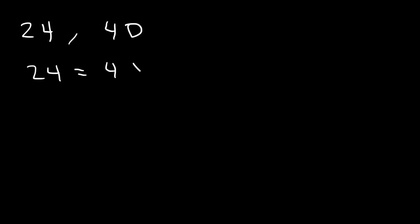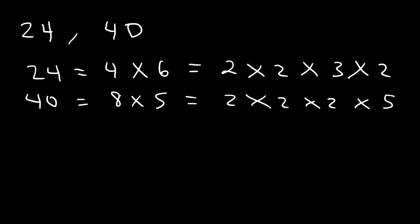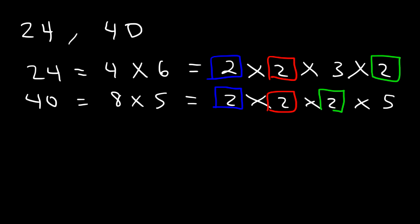Now, what about 24 and 40? Find the GCF between the two numbers. 24 is 4 times 6, and 4 is 2 times 2, and 6 is 3 times 2. So, that's the prime factorization of 24. 40 is 8 times 5, and 8 is basically 2 times 2 times 2. So, 24 has three 2s, and 40 has three 2s as well. You want to identify the prime numbers that are the same in both lists. 24 and 40 both contain three 2s — 2 times 2 times 2 — that's 8. So, 8 is the GCF in this problem.